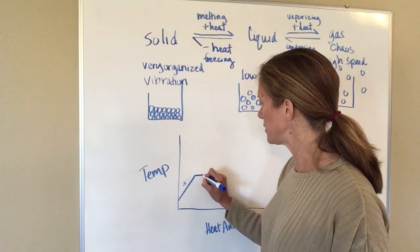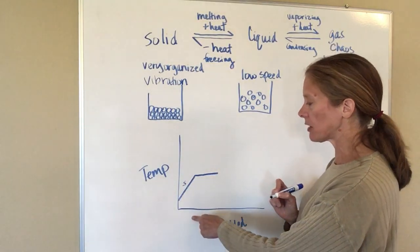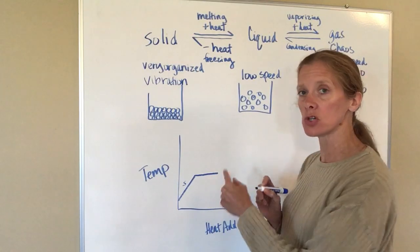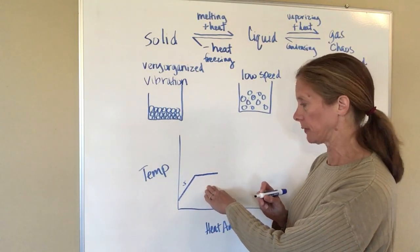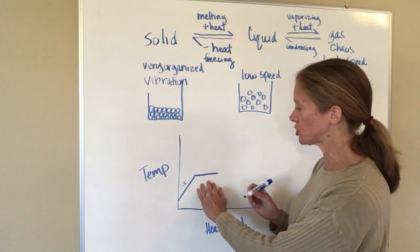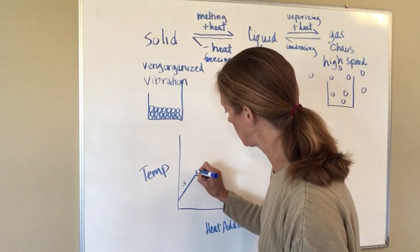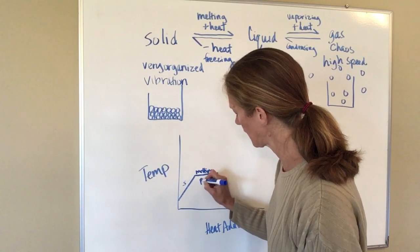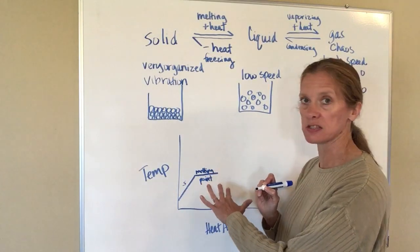What happens is that the temperature starts to level off. It doesn't matter how much more heat I add until all of that solid turns into a liquid, the temperature will not go up anymore. It stays right at that melting point until all of the solid has turned into a liquid. So right here is where your melting point is, and that's what's happening at this particular point of the diagram is that everything is melting.